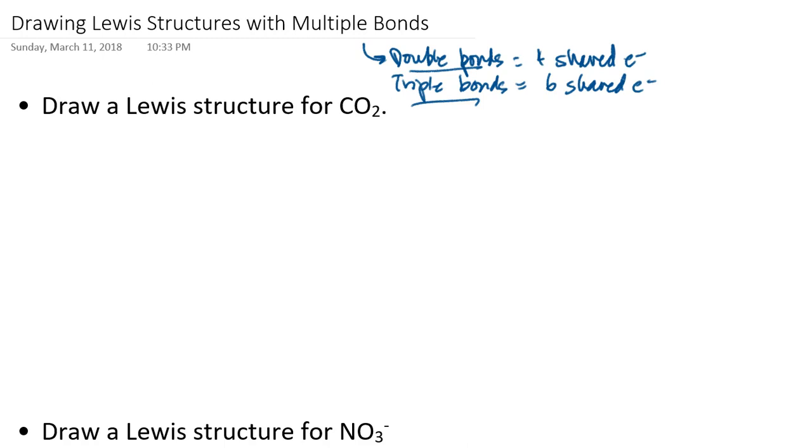The way that we figure that out is by still following the same rules for drawing Lewis structures like we have been, except when we're done with the process there's going to be an atom in the structure that has not satisfied the octet rule and yet we're already out of electrons that we can add to the structure. When that happens, that's when we would modify the structure to incorporate multiple bonds. The best way to see that is to actually go through a couple of examples.